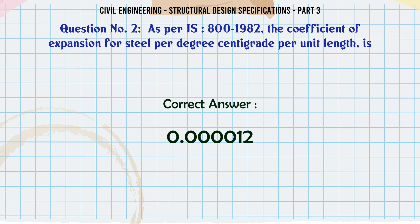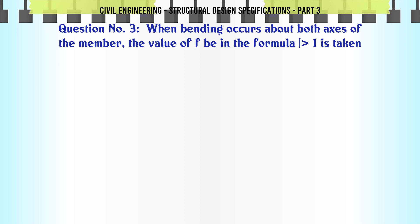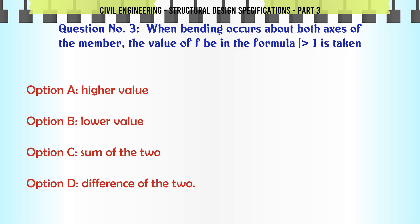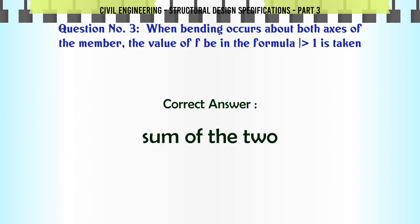When bending occurs about both axes of the member, the value of FB in the formula is taken as: a. Higher value, b. Lower value, c. Sum of the two, d. Difference of the two. The correct answer is: sum of the two.